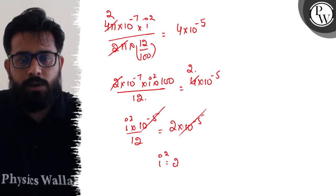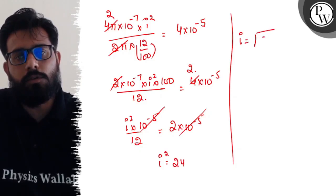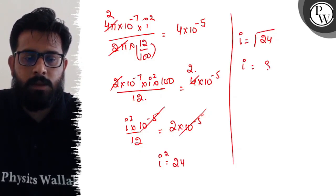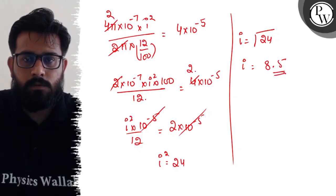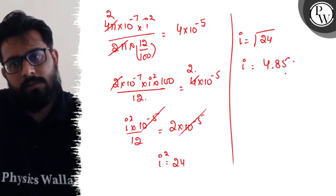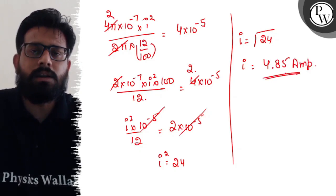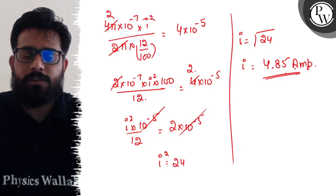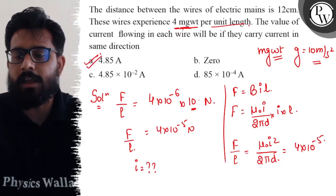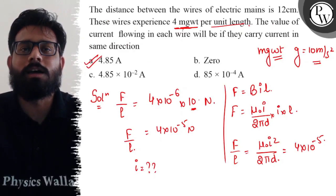Once you solve this, you will get the value of i as the square root of 24. When you solve this, you get i as 4.85 A. So it comes out to be 4.85 amperes, which you will find in option A. Hence, your option A is absolutely correct. I hope you got the concept of this question. All the best!